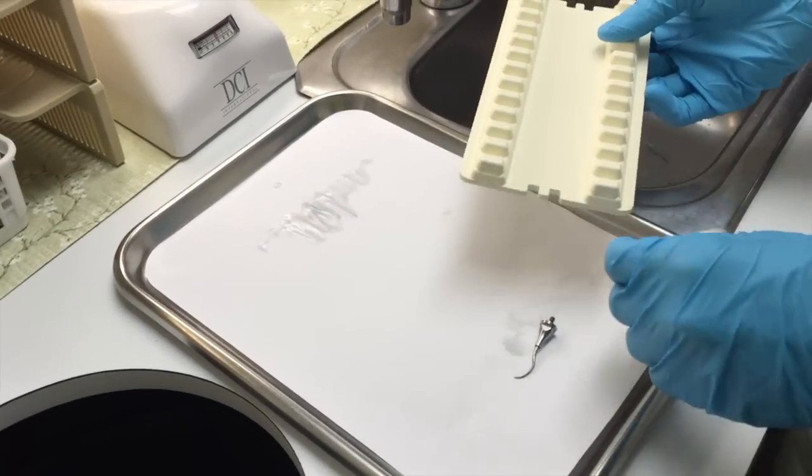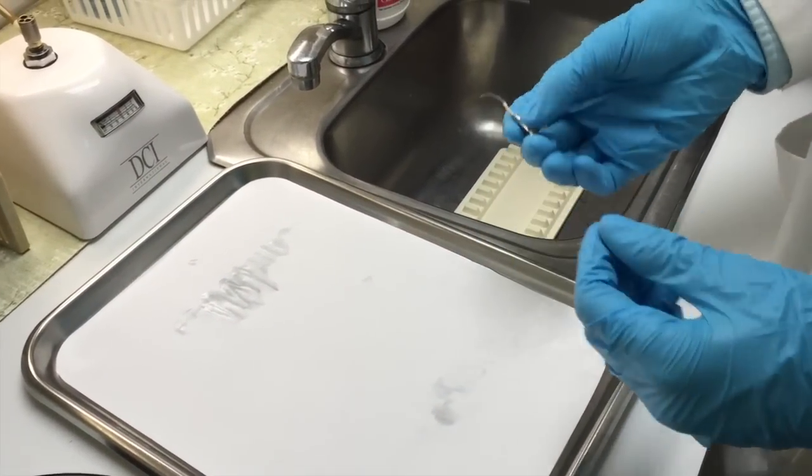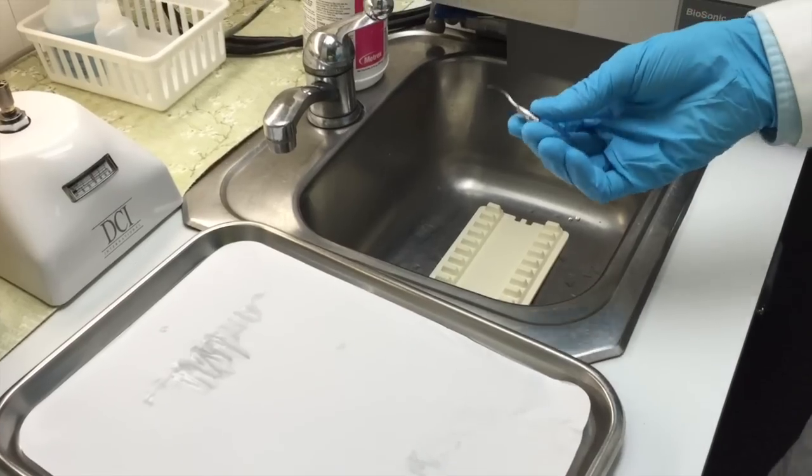While the instruments are running through the ultrasonic cleaner, we're going to take care of the rest of the tray. First thing we're going to do is take the instrument tray and put it in the sink, as well as the scaling tip, which we couldn't run through the ultrasonic cleaner due to its size.